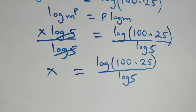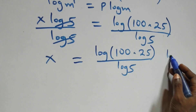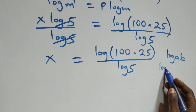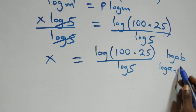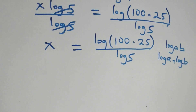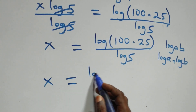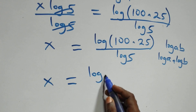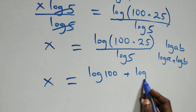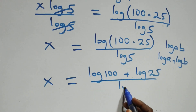From what we have here, this follows from a log rule: when we have log of a times b, this is the same thing as log a plus log b. So what we have here becomes x equals to log 100 plus log 25, all over log 5.